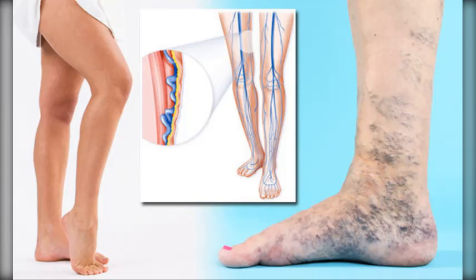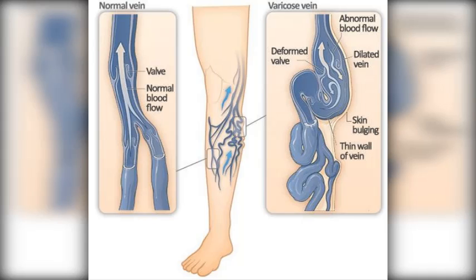Causes and symptoms of varicose veins: Varicose veins happen when the faulty valves in the vein allow blood to flow in the wrong direction. When the valves are weak or damaged, the blood can back up and overload the pressure on the vein, which causes the vein to become varicose.